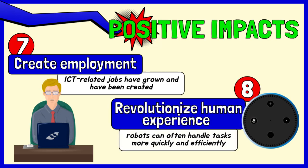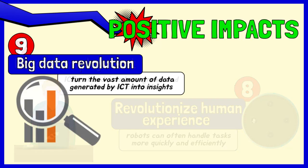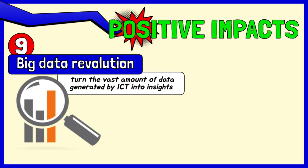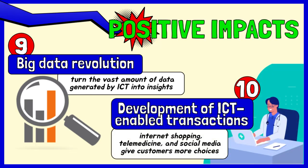Revolutionize human experience: ICT continues to revolutionize all parts of the human experience. Computers once answered phones and directed calls to appropriate individuals. Now, robots not only can answer the calls, but they can often more quickly and efficiently handle callers' requests for services. Big data revolution: organizations turn the vast amount of data generated by ICT into insights that drive new products and services. Development of ICT-enabled transactions, such as internet shopping and telemedicine, and social media that give customers more choices in how they shop, communicate, and interact.